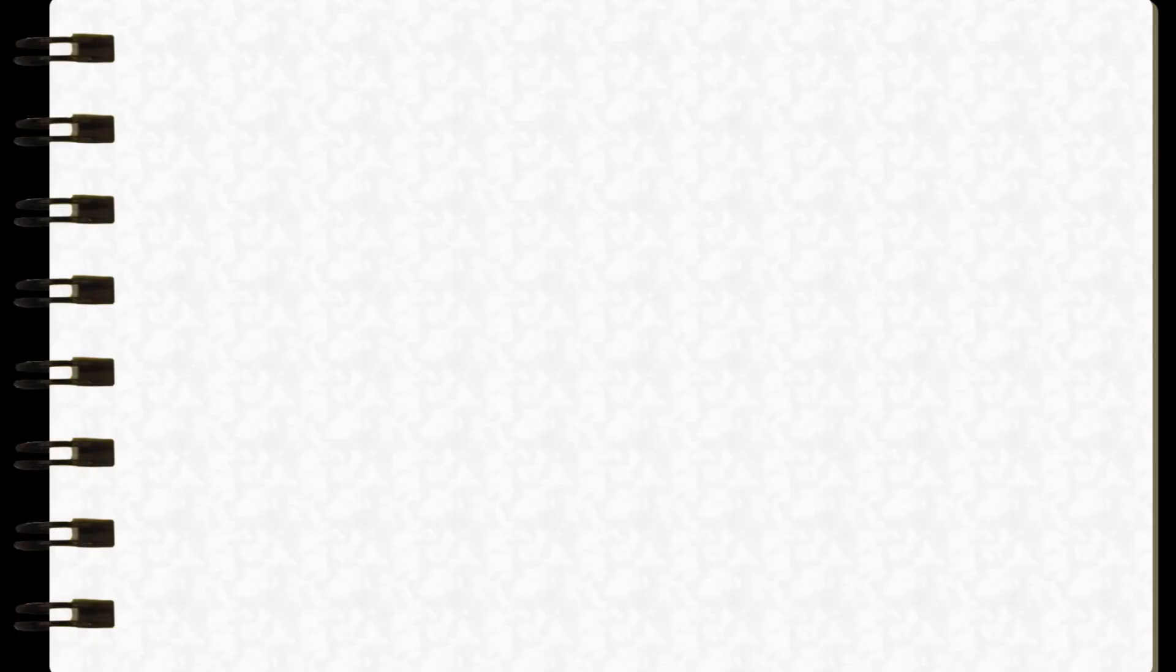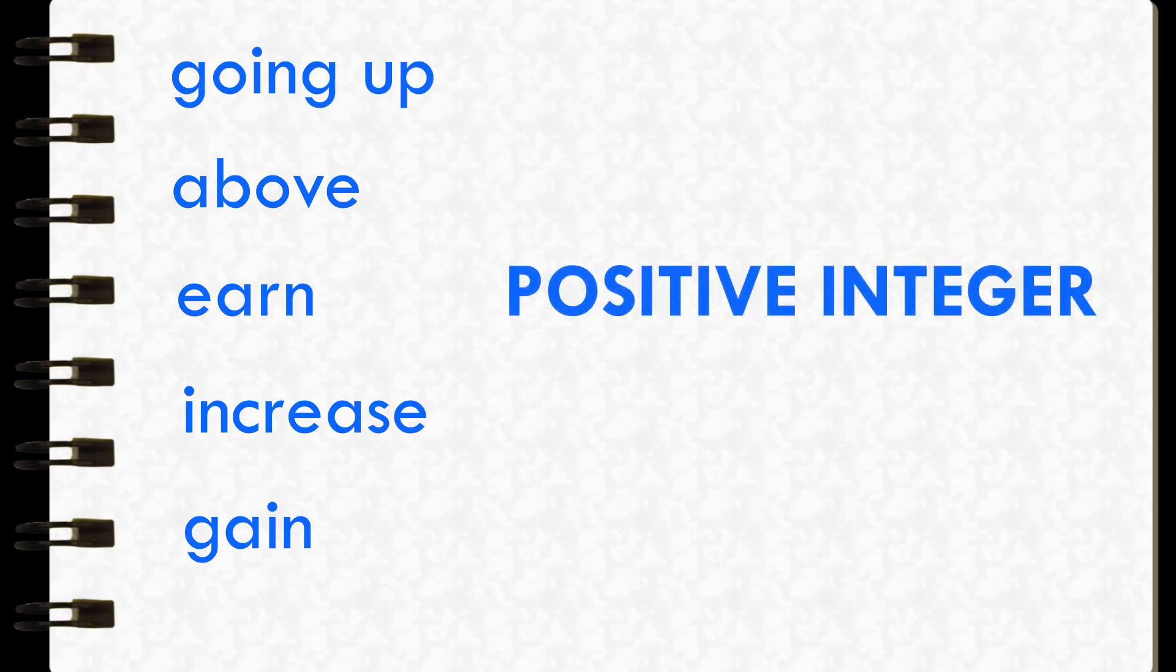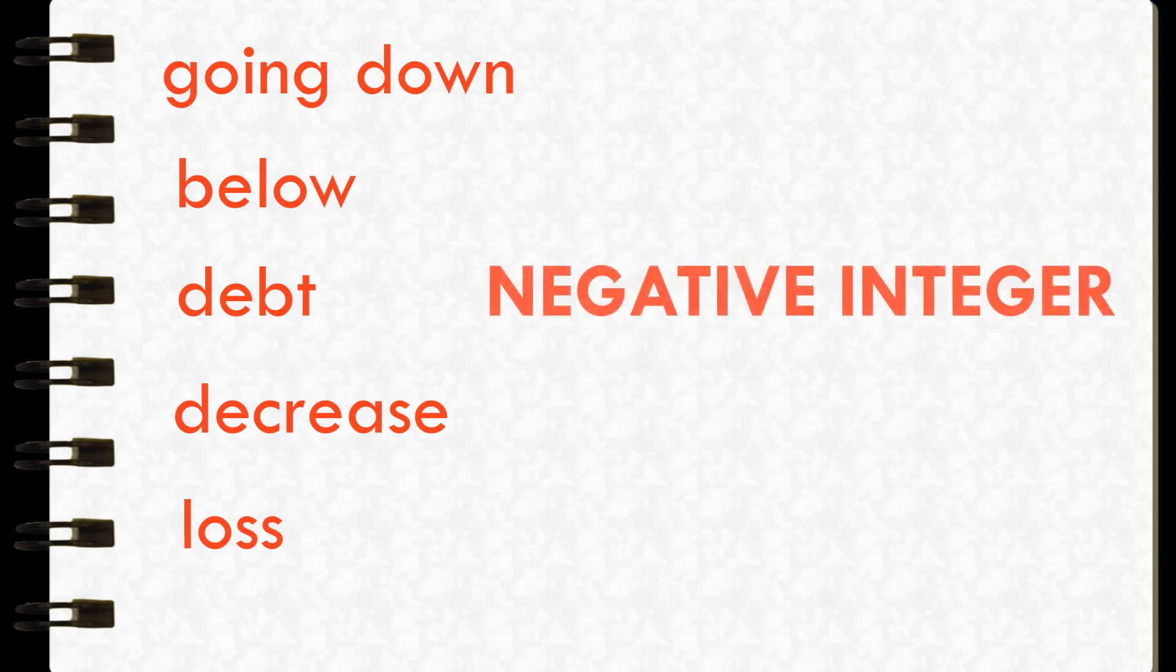Four millimeters of rain above normal can be written as an integer, positive 4. So the words going up, above, earn, increase, gain, can be used to represent positive integers. In contrary, going down, below, depth, decrease, loss, can be used to represent negative integers.